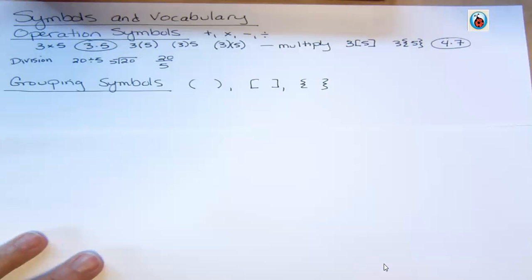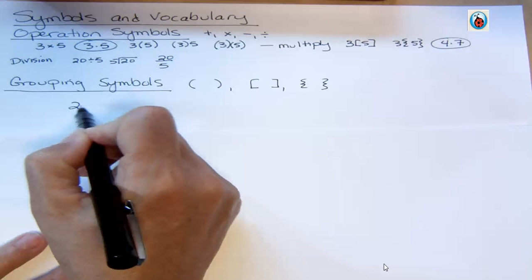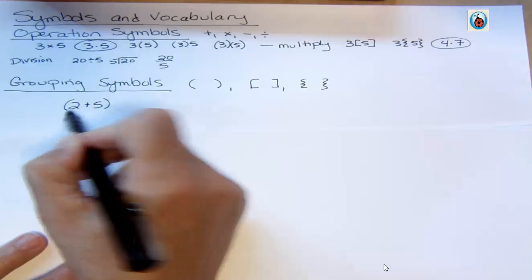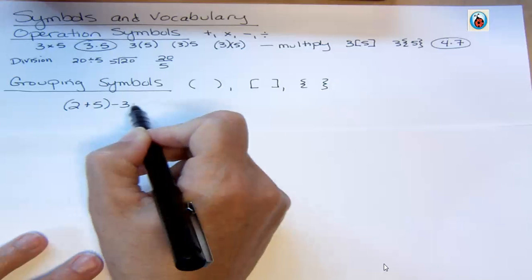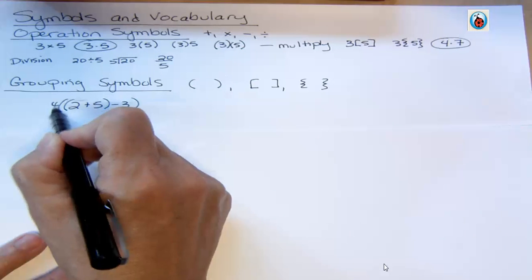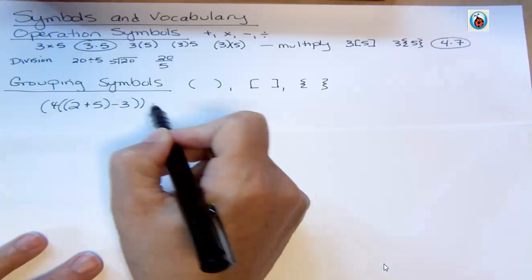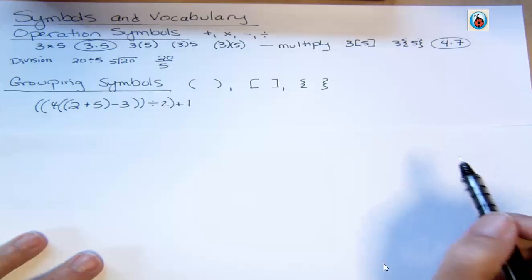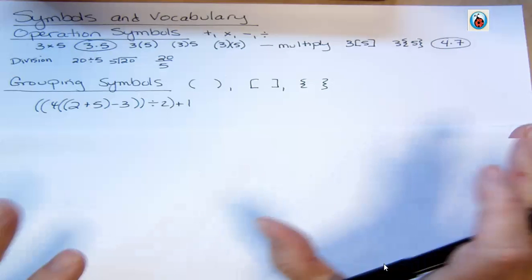But if I have a problem like this, let's say I had 2 plus 5. And then I'm like, no, I want to subtract 3 from that. No, I want to take that whole thing and multiply by 4. Then I want to take that whole thing and divide by 2. Then I think I'll take that whole thing and add 1. See how hard that is to read with all those parentheses in it?